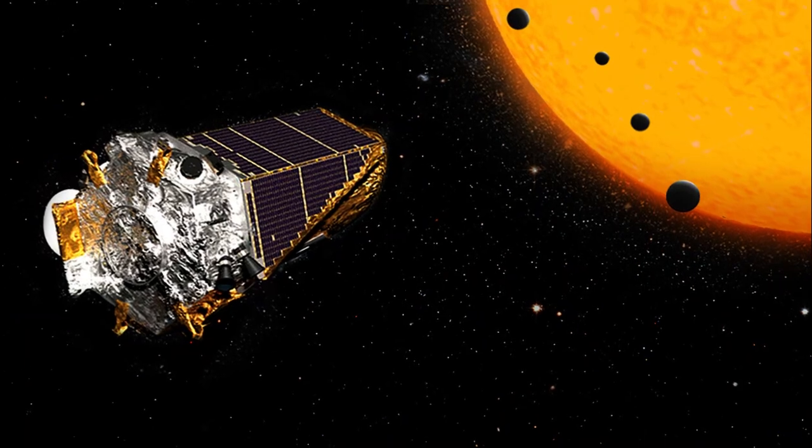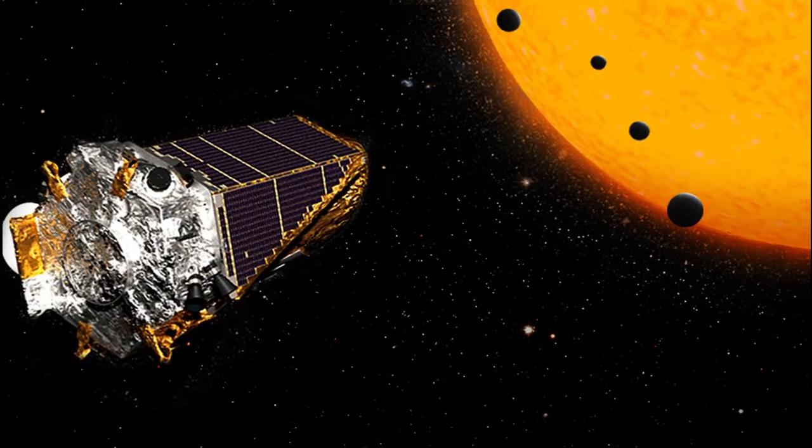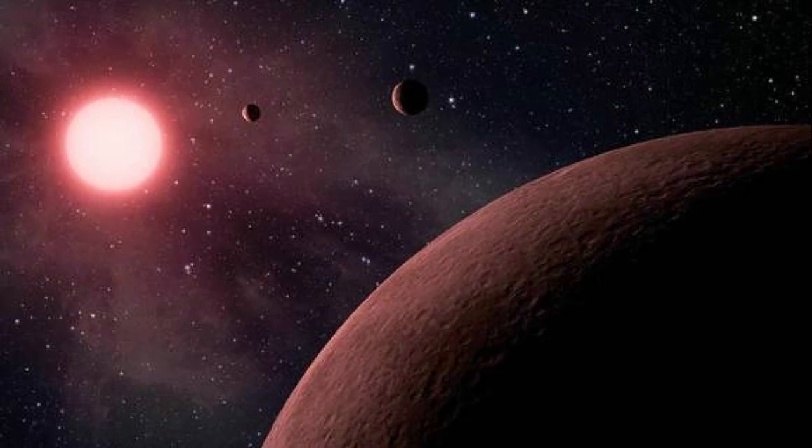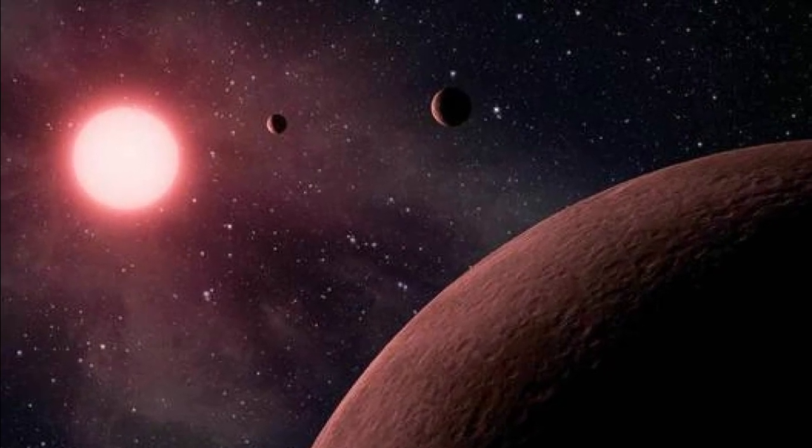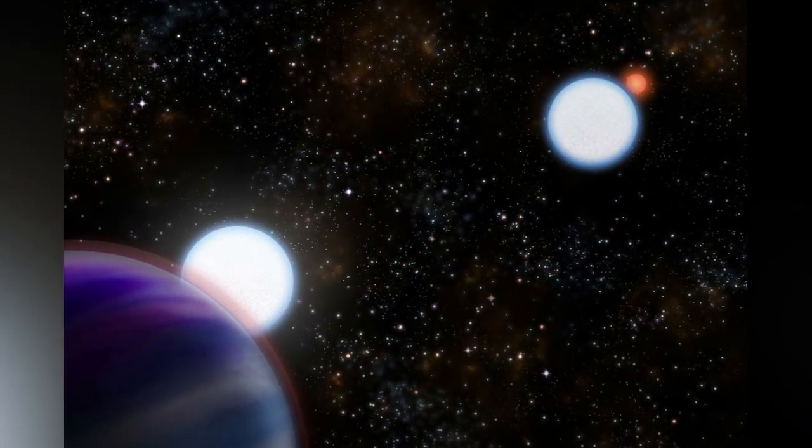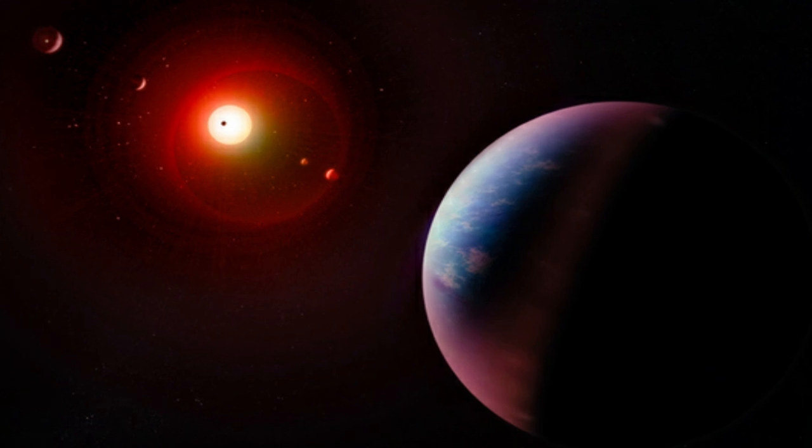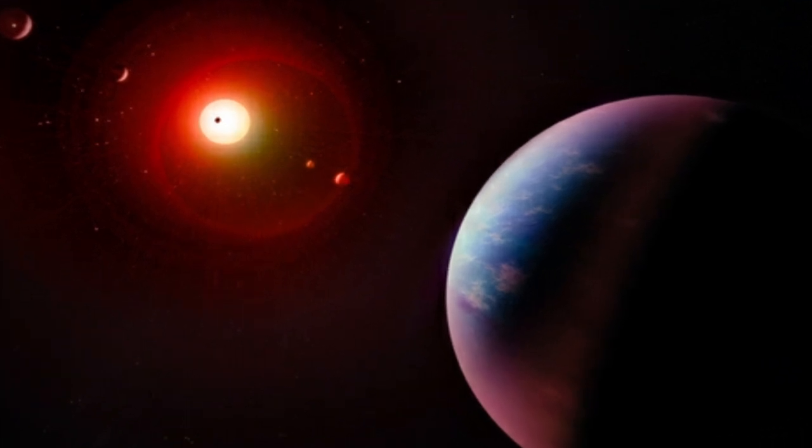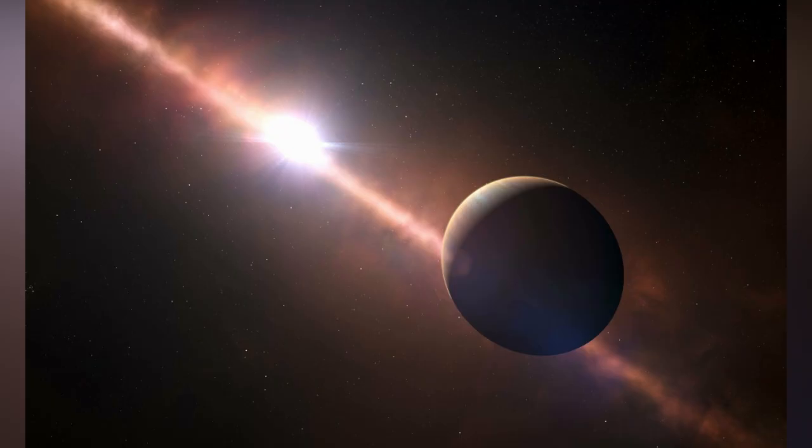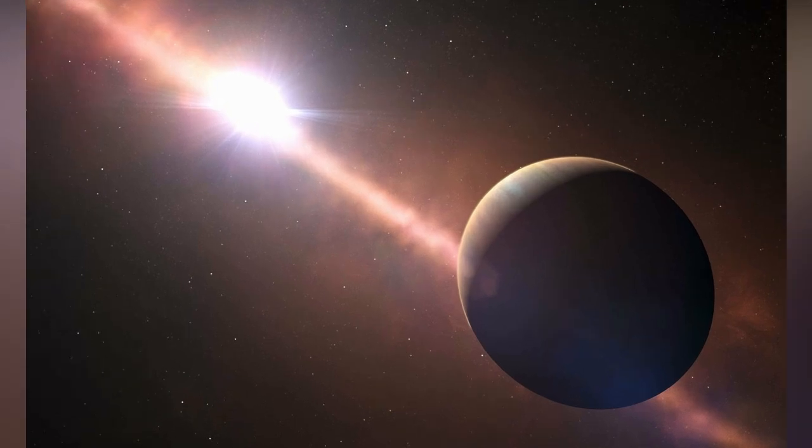When Kepler detects an exoplanet, it does so by sensing the very slight dip in starlight from a given star. The premise is simple: an exoplanet orbits in front of a star, known as a transit, Kepler detects a slight dimming of starlight and creates a light curve, basically a graph charting the dip in starlight over time. Much information can be gleaned from the light curve, such as the physical size of the transiting exoplanet.